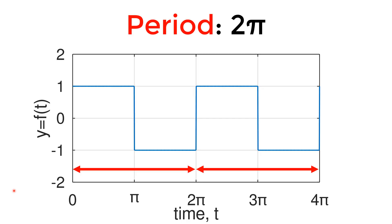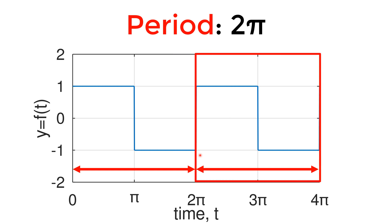Before I jump into the plots, I just wanted to make sure we are on the same page for a couple of key terminologies. The first one is period. The built-in function square is designed based on the period of 2 pi, meaning the square function repeats every 2 pi. In this figure, you have two identical square wave functions between 0 and 4 pi, and the first wave function can be used as a building block repeating every 2 pi.